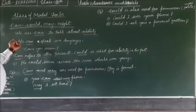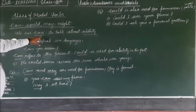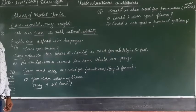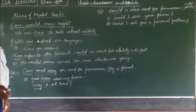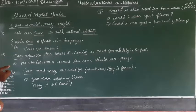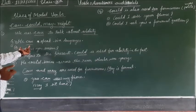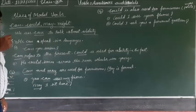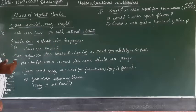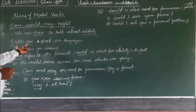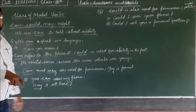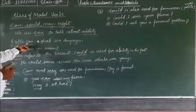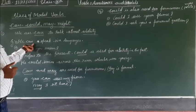So the first use of can: we use can to talk about ability. When we talk about ability, we use can. Here you can see the example — 'He can speak 6 languages.' This means his ability is to speak 6 languages, so he is able to speak 6 languages. Can is used to express ability.